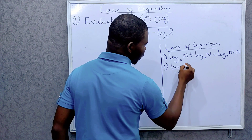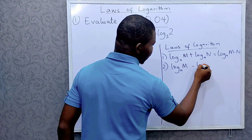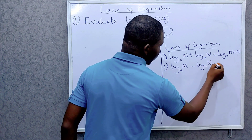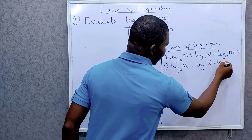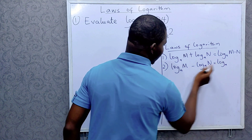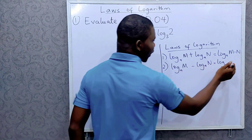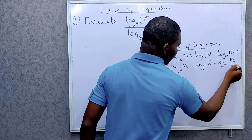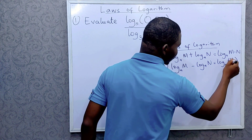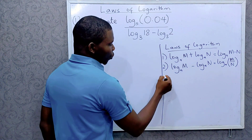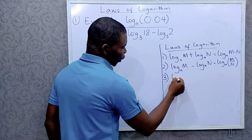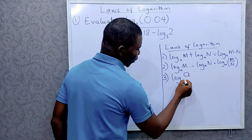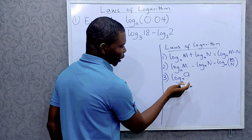The second law: when we have logarithm of the same base subtracted from each other, we simply divide the arguments. So this would be log base a of m divided by n.